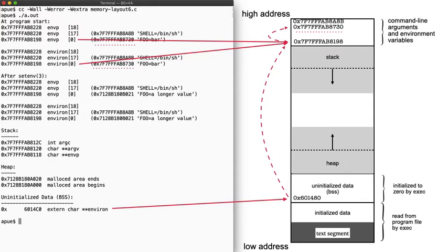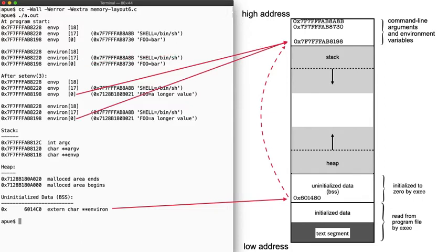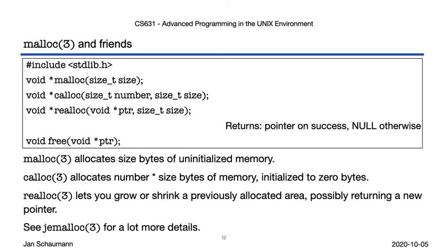Now let's see what happens when we use setenv to change the value of a variable already in our environment. Let's change foo to a longer value. After we call setenv, envp[0] still points at b8198, as does environ[0]. But the char star at that location now points to a different place. It looks like setenv dynamically allocated some memory for the new string — a longer value — and so updated the pointer at b8198 to point there. To dynamically allocate a buffer, we use the malloc function.